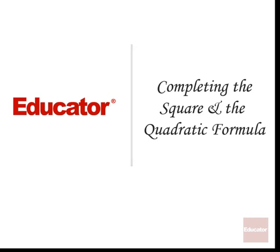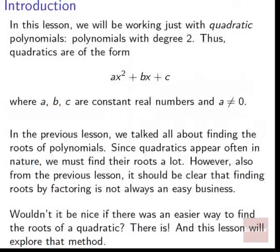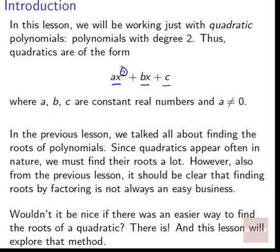Hi, welcome back to Educator.com. Today we're going to talk about completing the square and the quadratic formula. In this lesson we'll be working just with quadratic polynomials, that is polynomials that have degree 2. Quadratics have the form ax² + bx + c, degree 2, where a, b, c are constant real numbers and a is not equal to 0, otherwise it wouldn't be a quadratic anymore because we would have knocked out that x².